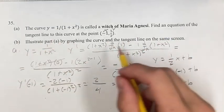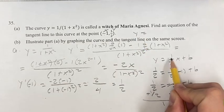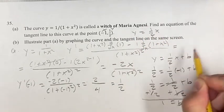We get b is equal to 1. So the equation of the tangent line to the curve at the point is y equals 1 half x plus 1.